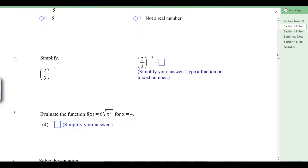Number 2. 2 thirds to the negative 3. When you have a negative exponent and you've got a fraction, it's the same as you flip the fraction and then you have a positive exponent. And so when we do that, you can cube the top and cube the bottom. So you're going to have 27 over 8.